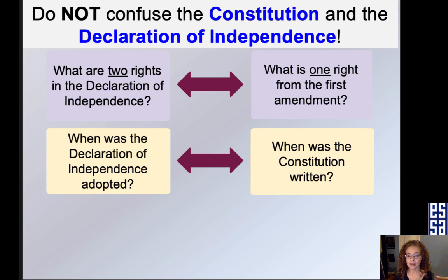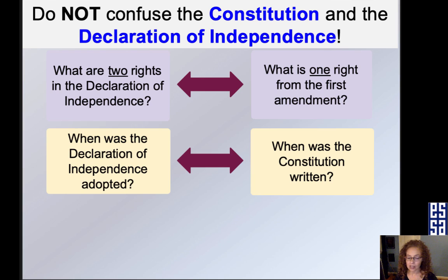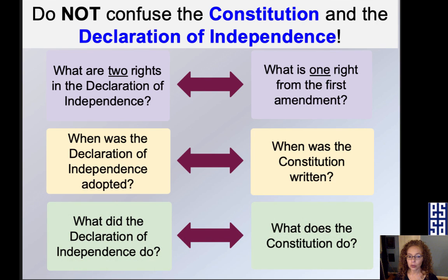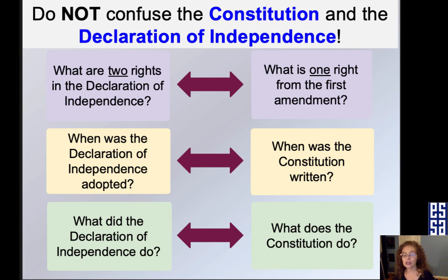When was the Declaration of Independence adopted? July 4th, 1776. When was the Constitution written? 1787 — two different dates. What did the Declaration of Independence do? It said the United States was free, or it declared our independence from Great Britain. What does the Constitution do? It sets up our government.